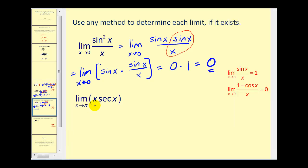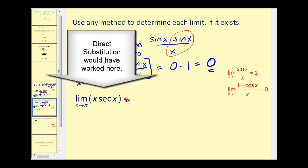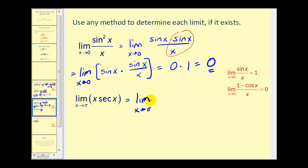Okay, on this next one, notice we have sec(x). Let's go ahead and rewrite this as 1 over cos(x). So we have x in the numerator and then divided by cos(x) in the denominator. As x approaches π, the numerator approaches π. And as cos(x) approaches π, it's going to approach the value of negative one. So our limit is equal to negative π.